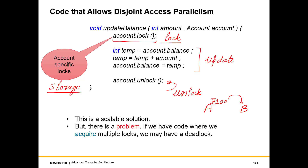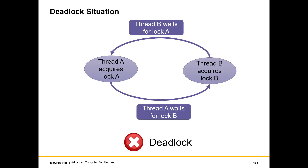Such deadlock situations are difficult to handle. Assume there are two threads A and B. Thread A will acquire lock A and wait for thread B to relinquish lock B. Thread B will acquire lock B and wait on thread A to relinquish lock A. We have a circular wait here with no thread making any progress — a deadlock situation.